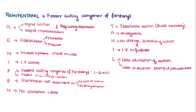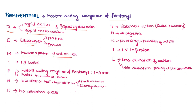Remifentanil is a faster-acting congener of fentanyl. You can remember it using a mnemonic from the letters in 'remifentanil': R stands for rapid action and rapid metabolism, which is mainly due to the presence of plasma as well as tissue esterases that produce rapid metabolization. M stands for muscle spasm, especially chest muscle spasm.